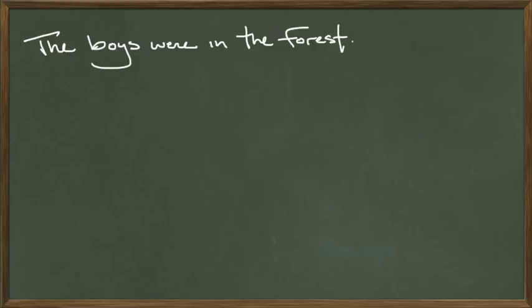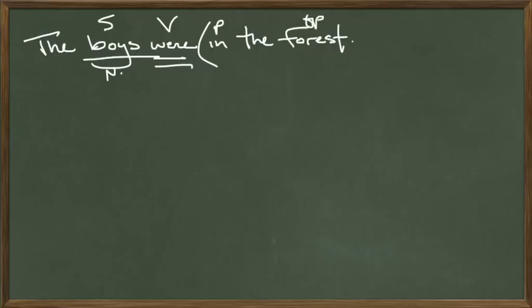The boys were in the forest. Subject of the sentence? Boys. Nominative case. What were they doing? Well, they were — they existed. They were in the forest. So 'were' is our verb. 'In' is a preposition. In what? Forest — object of the preposition. 'In the forest' is a prepositional phrase, ablative case. 'The' is an article adjective. We don't have to translate those because the Romans didn't have them, but we do need to put them in our diagram.